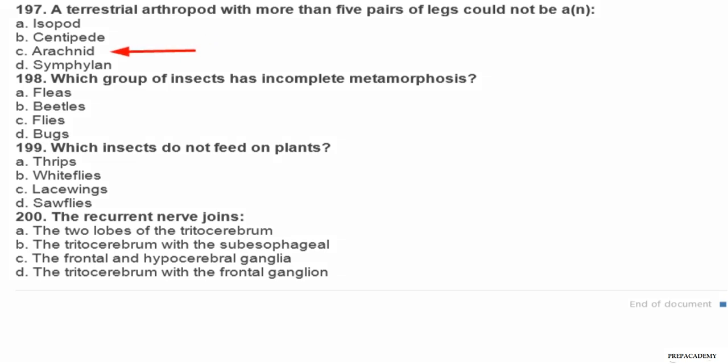Question 198. Which group of insects has incomplete metamorphosis? A fleas, B beetles, C flies, D bugs. Question 199. Which insects do not feed on plants? A thrips, B whiteflies, C lacewings, D sawflies. Question 200. The recurrent nerve joins: A the two lobes of the tritocerebrum, B the tritocerebrum with the subesophageal ganglion, C the frontal and hypocerebral ganglia, D the tritocerebrum with the frontal ganglion.